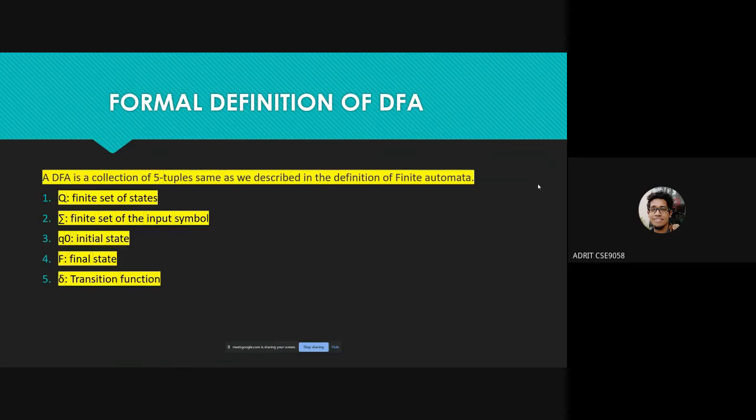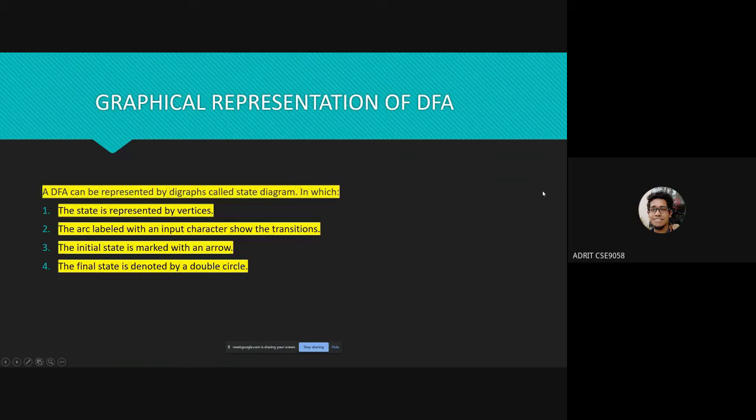A DFA can also be represented by digraphs called state diagrams, in which the state is represented by vertices, the arcs labeled with an input character show the transitions, the initial state is marked with an arrow, and the final state is denoted by a double circle.